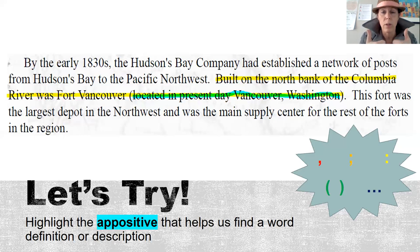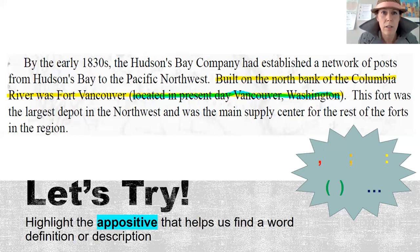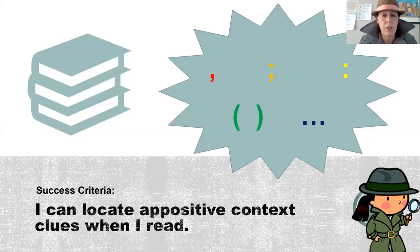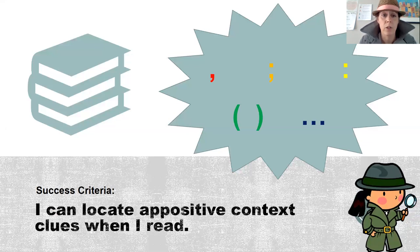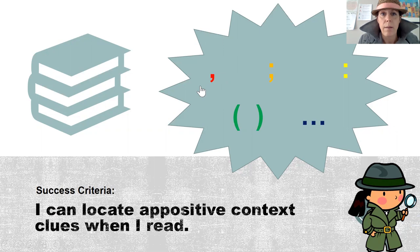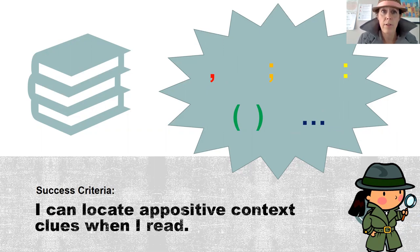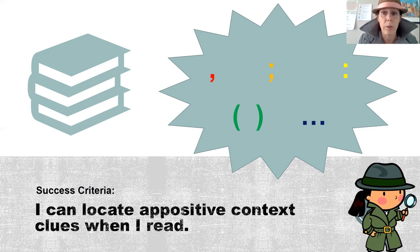That's what context clues do — they give us information we understand that helps us understand our reading even better. You have to be a detective and look out for those context clues, slow down, and read them. Our success criteria was: I can locate appositive context clues when I read. Remember, appositives are found either before or after an unknown word or phrase, usually with a comma, semicolon, colon, parentheses, or dot dot dot. Look at your punctuation and then read the words before or after it to see if they give you a context clue. I'll see you next.